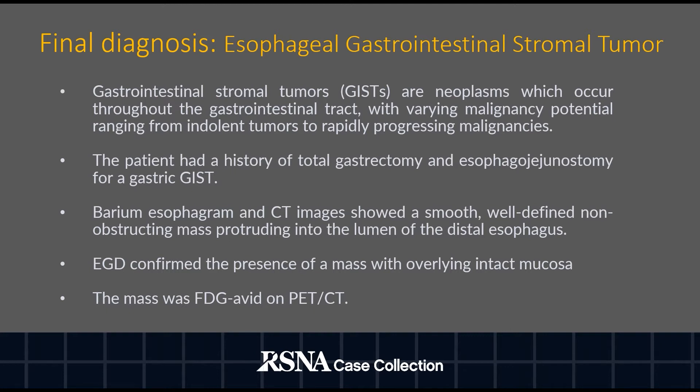Barium esophagram and CT images show a smooth, well-defined, non-obstructive mass protruding into the lumen of the distal esophagus. Upper endoscopy confirmed the presence of a mass with overlying intact mucosa, which was FDG-avid on PET scan. Pathology from the esophageal mass biopsy revealed a gastrointestinal stromal tumor pathologically similar to the prior gastric mass, indicative of disease recurrence.